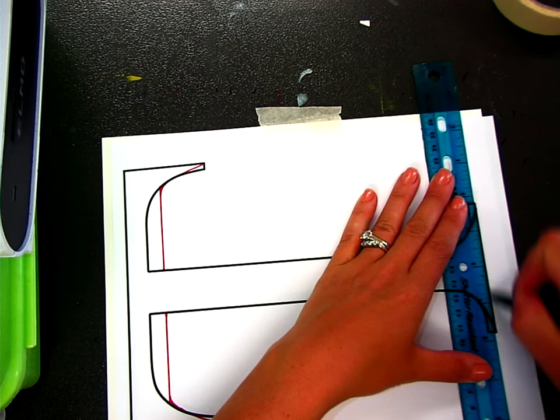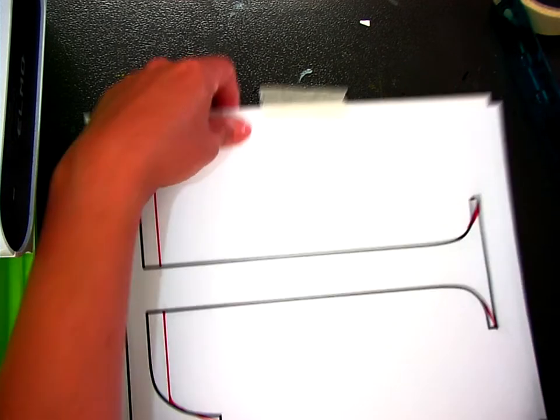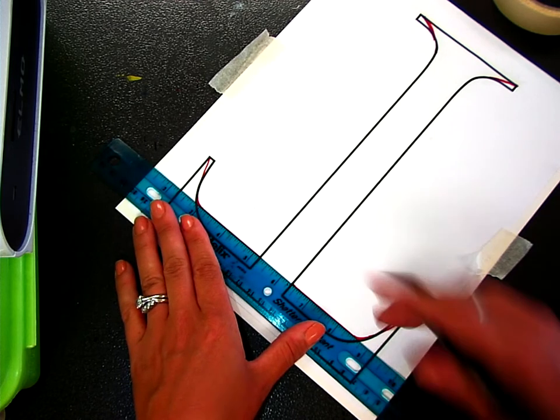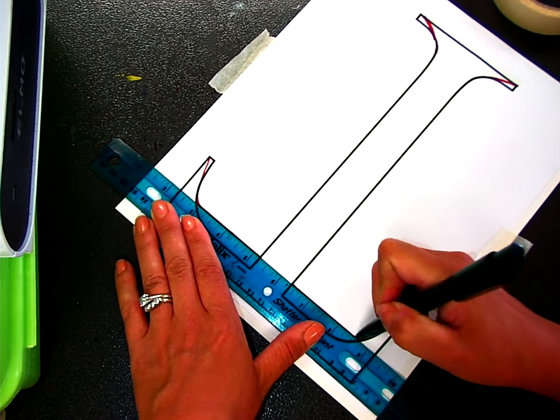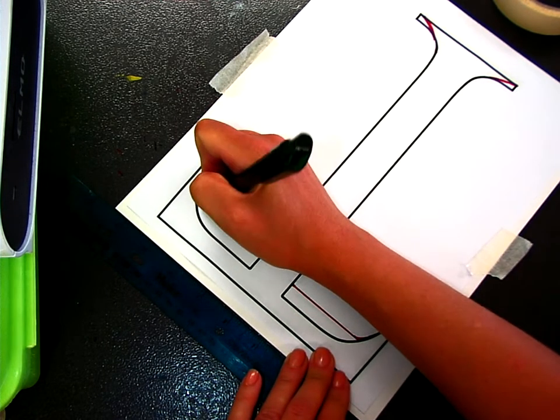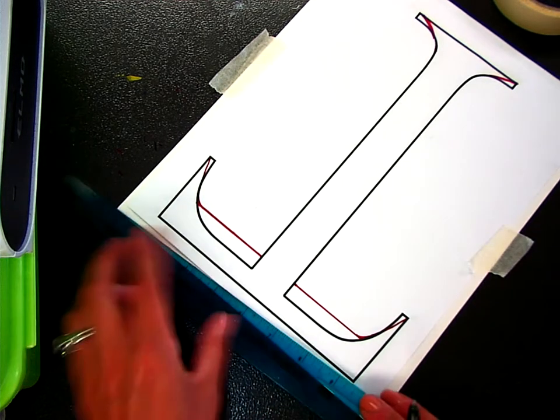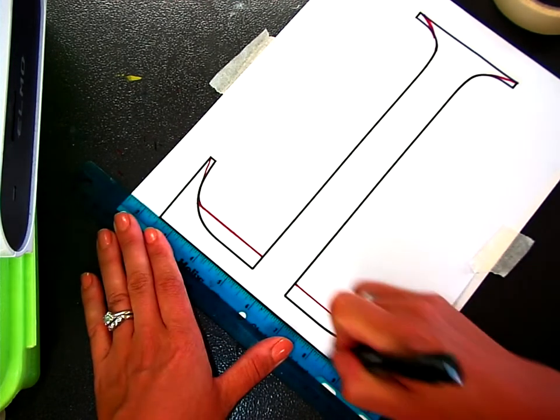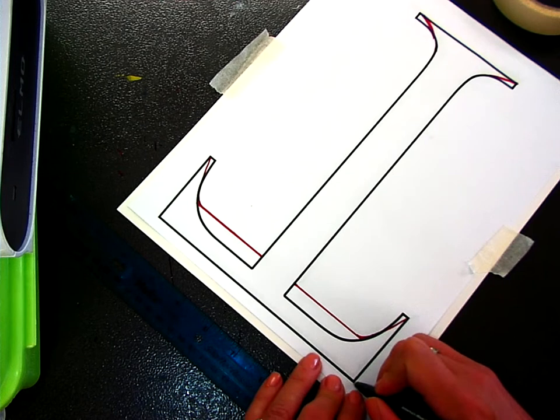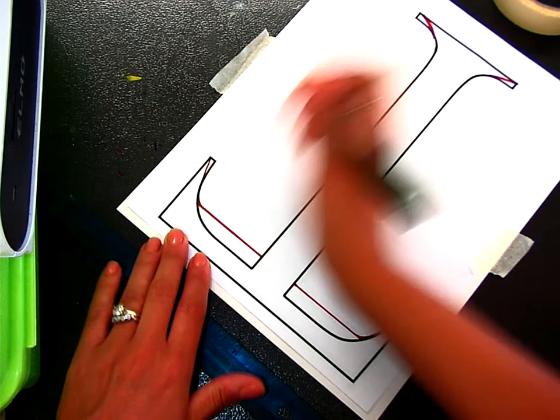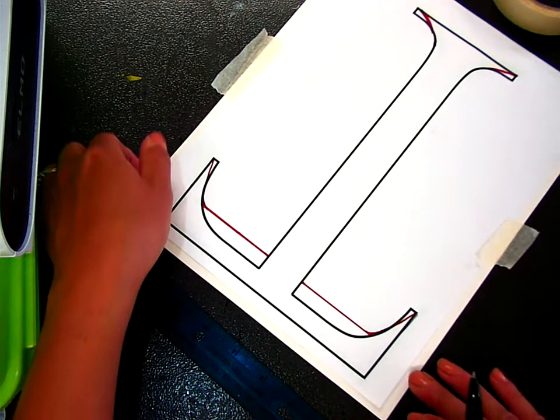So what's going to happen is the pencil lines that you put on the back, that rubbing, is going to transfer onto the good paper when you trace over it. It's like making your own carbon paper. Easy thing to do with a lot of different things you want to trace and you don't have carbon paper. So I just test it to make sure that I've gone through and I have.